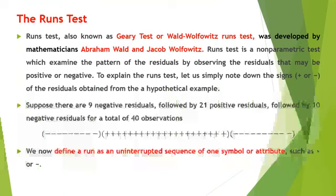Graphical methods, although powerful and suggestive, suffer from a serious drawback in that they are subjective or qualitative in nature. There are also a large number of quantitative tests that can supplement the purely qualitative approach. We now consider some of these tests, beginning with the Runs test of randomness.